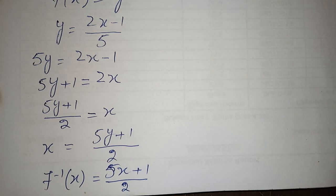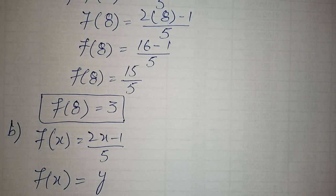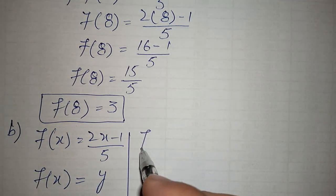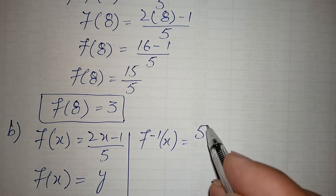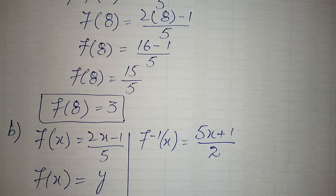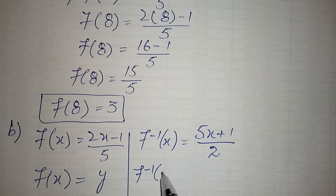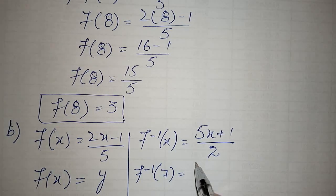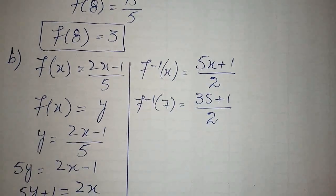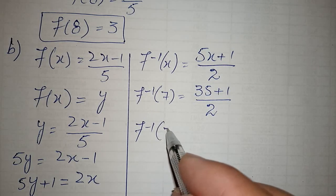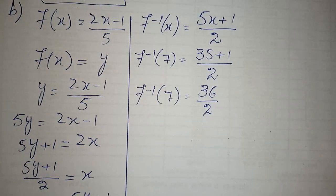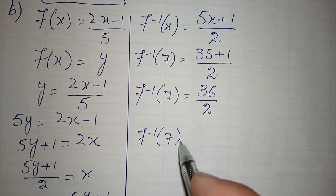This is your inverse function. Now you have to find f inverse of 7. First you write the inverse function. f inverse of x is equal to 5x plus 1 upon 2. Now replace x with 7. f inverse of 7 is equal to 5 times 7 is 35 plus 1 upon 2. Now f inverse of 7 is equal to 36 upon 2.